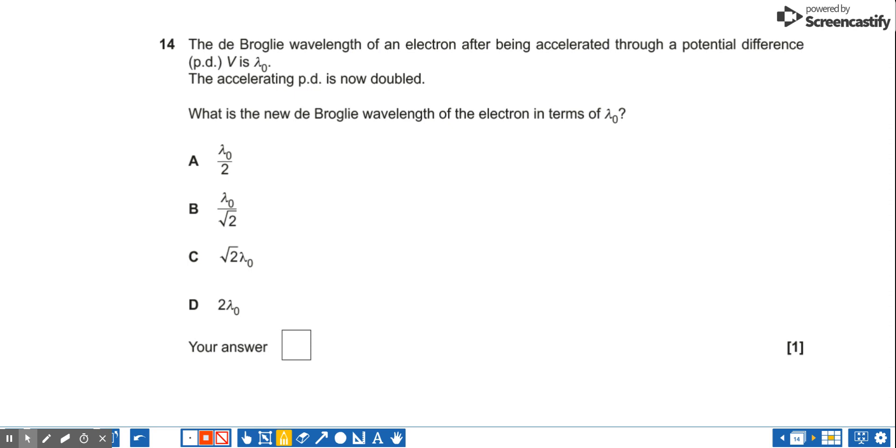OK, so we've got lambda is equal to Planck's constant over the momentum. And the work done on the electron is going to manifest itself as being its kinetic energy, mV squared over 2.